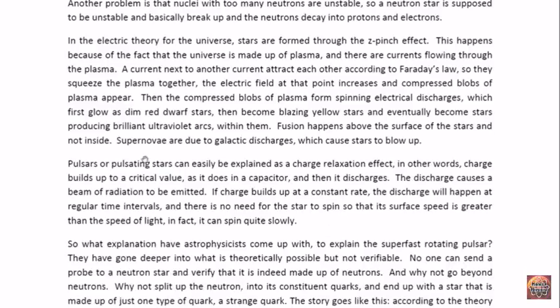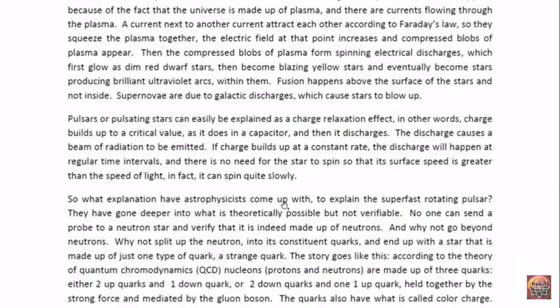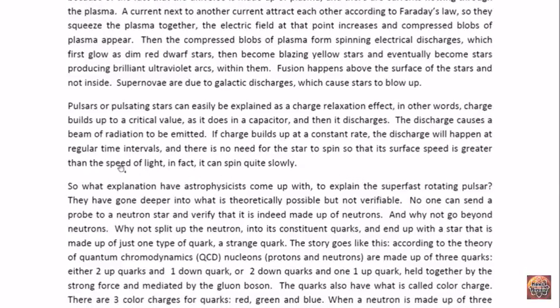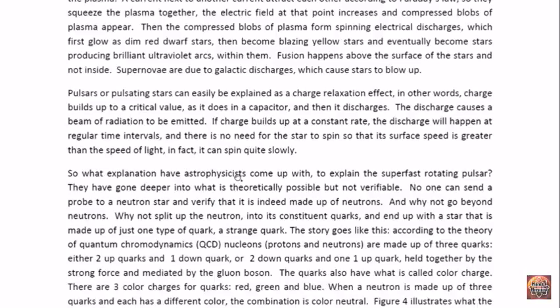Pulsars or pulsating stars can easily be explained as a charge relaxation effect in this theory. In other words, charge builds up to a critical value in a star, as it does in a capacitor, and then the star discharges. This discharge causes a beam of radiation to be emitted. If charge builds up at a constant rate, the discharge will happen at regular time intervals. And so there's no need for the star to spin or rotate very fast. So its surface speed does not have to go anywhere near the speed of light. It can be quite slow.